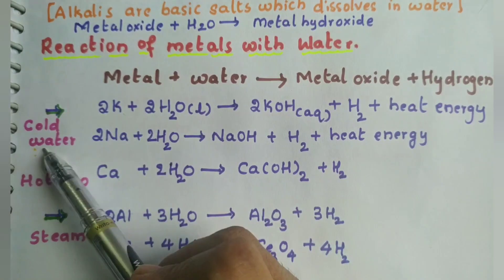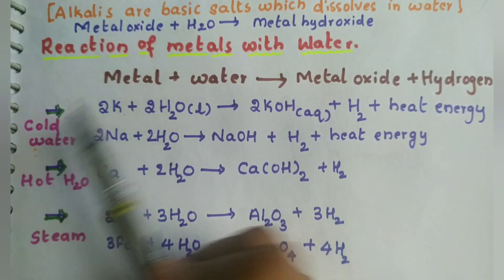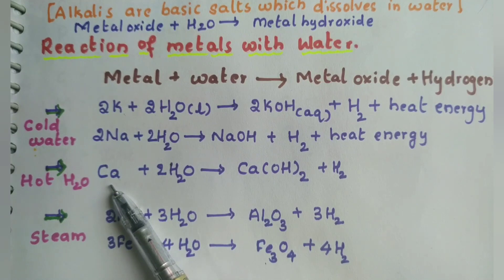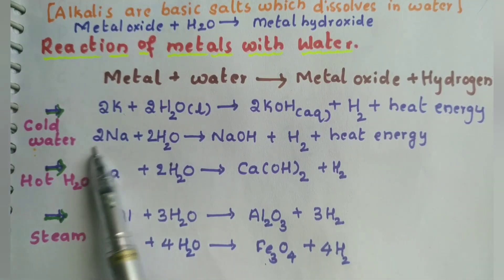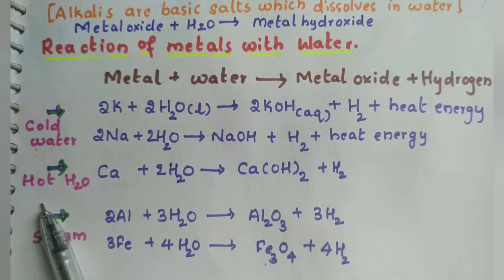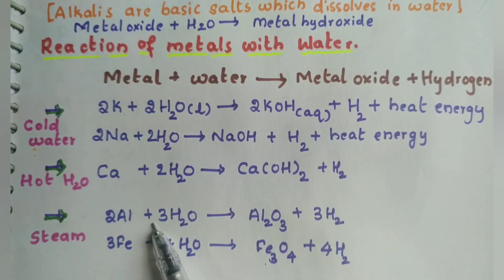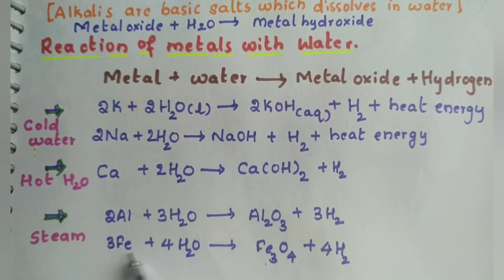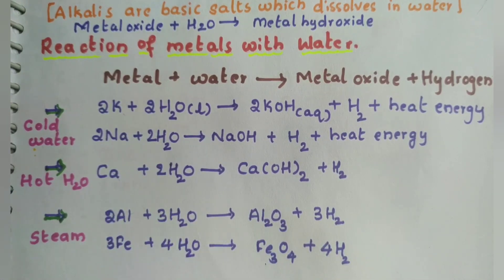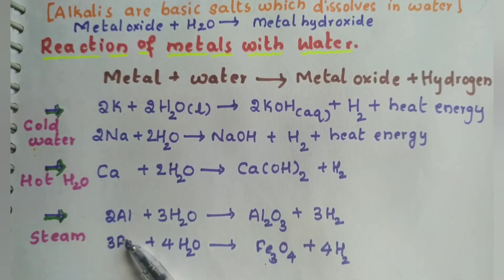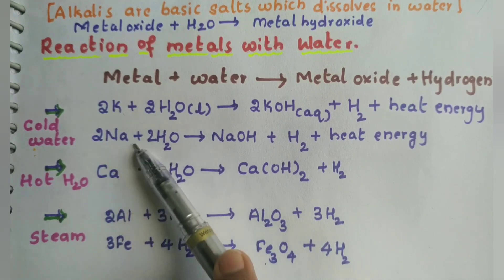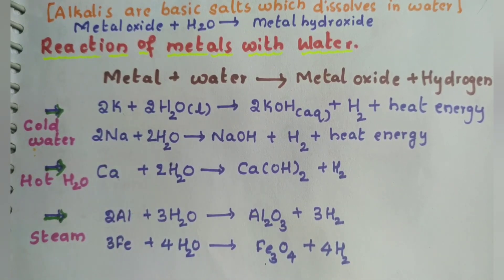Potassium is highly reactive, so it can react with even cold water. Calcium is moderately reactive — it comes under the moderately reactive metals, so it can react with hot water. But when we come to aluminium and iron, they react with steam — they come under the below-moderately-reactive metals. They are very less reactive and have very little affinity towards water, which is why they don't react with cold or hot water. We will study the reactivity series later on.